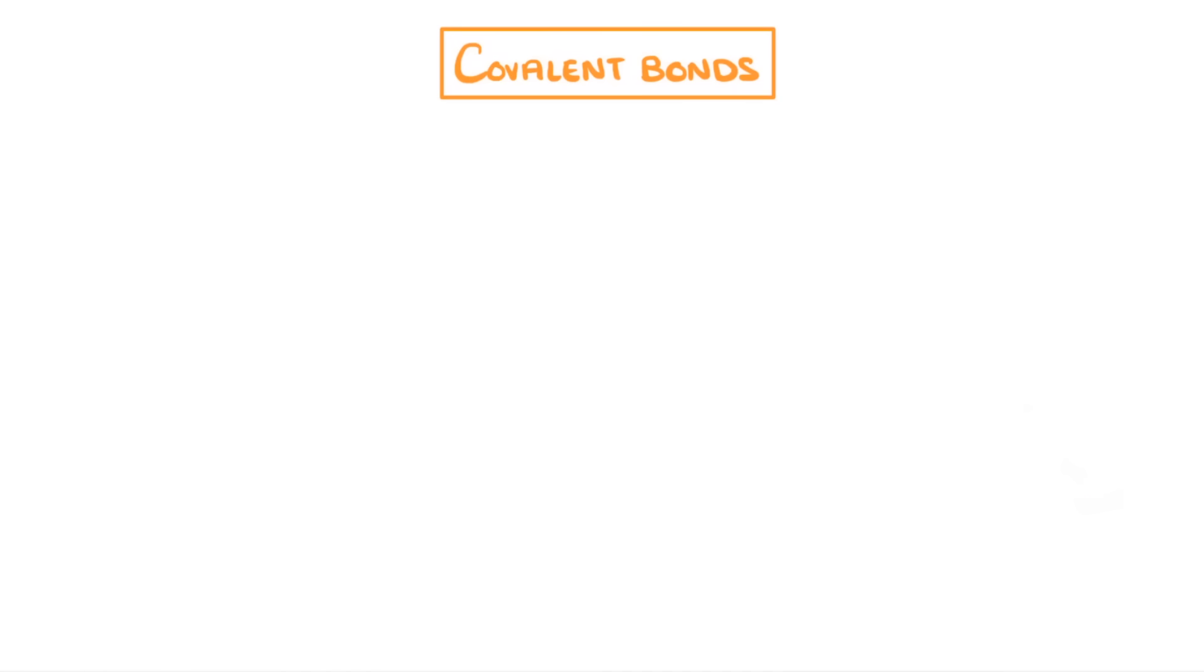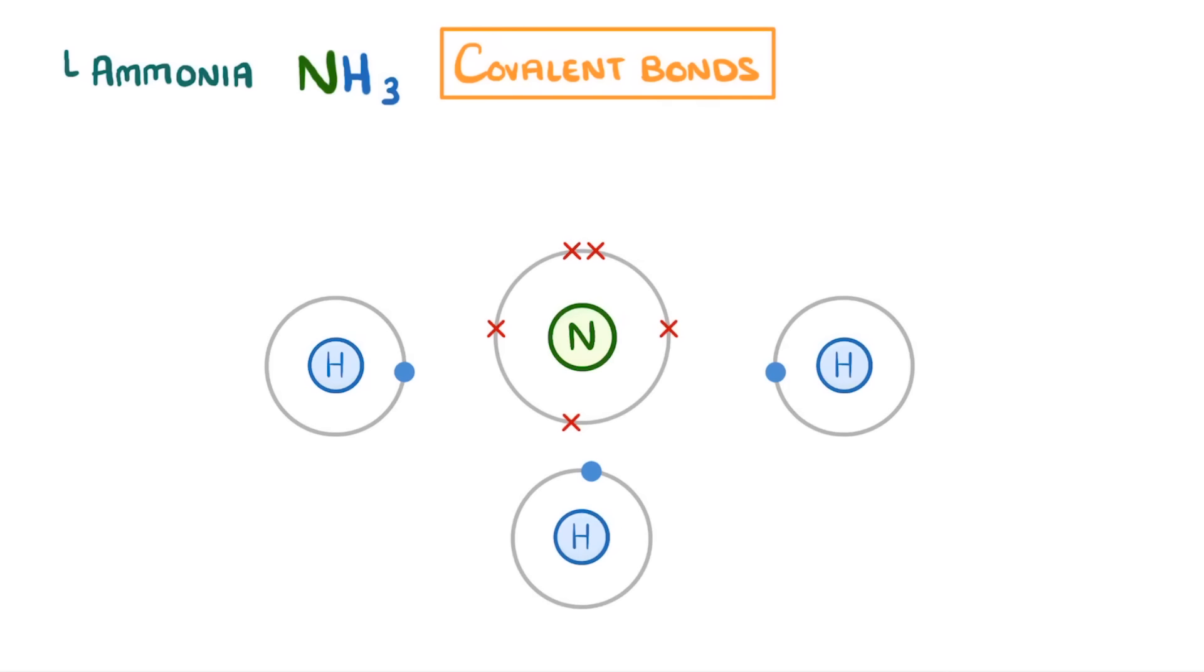For a slightly harder example, let's try to draw the covalent bonding in ammonia, which we just saw. It has the molecular formula NH3, so we can tell that there's one nitrogen and 3 hydrogen atoms, and the first step is to draw all of these out.